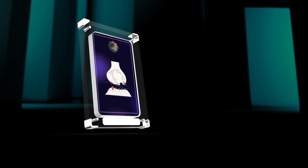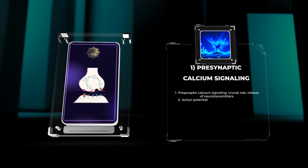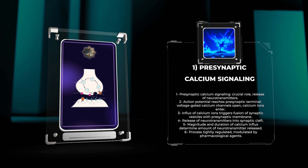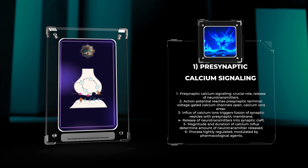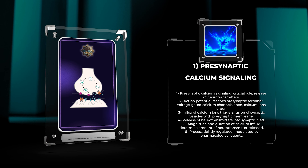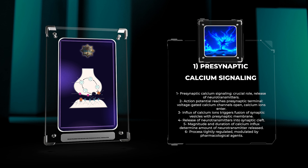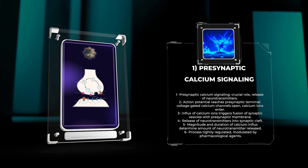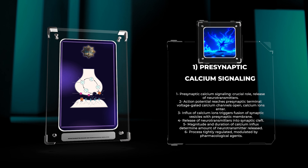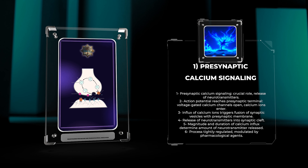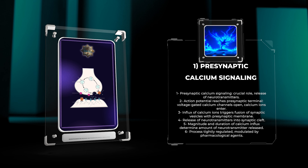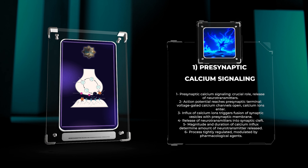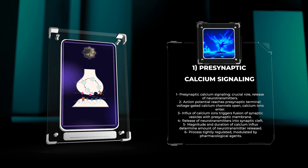Presynaptic calcium signaling plays a crucial role in the release of neurotransmitters. When an action potential reaches the presynaptic terminal, voltage-gated calcium channels open, allowing calcium ions to enter the terminal. The influx of calcium ions triggers the fusion of synaptic vesicles with the presynaptic membrane, leading to the release of neurotransmitters into the synaptic cleft. The magnitude and duration of the calcium influx determine the amount of neurotransmitter released, and this process can be modulated by various pharmacological agents.